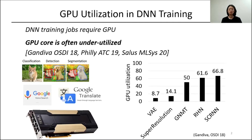Also, as you can see in the right chart, some models show low GPU utilization during training, ranging from 8% to 66%. Low GPU utilization is a critical issue since GPU has become one of the most contended resources in cluster systems.